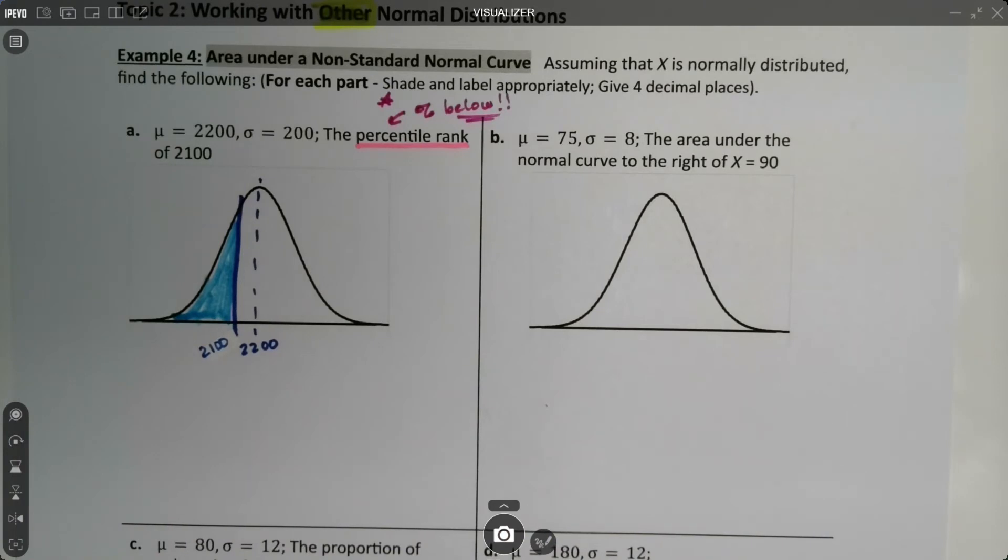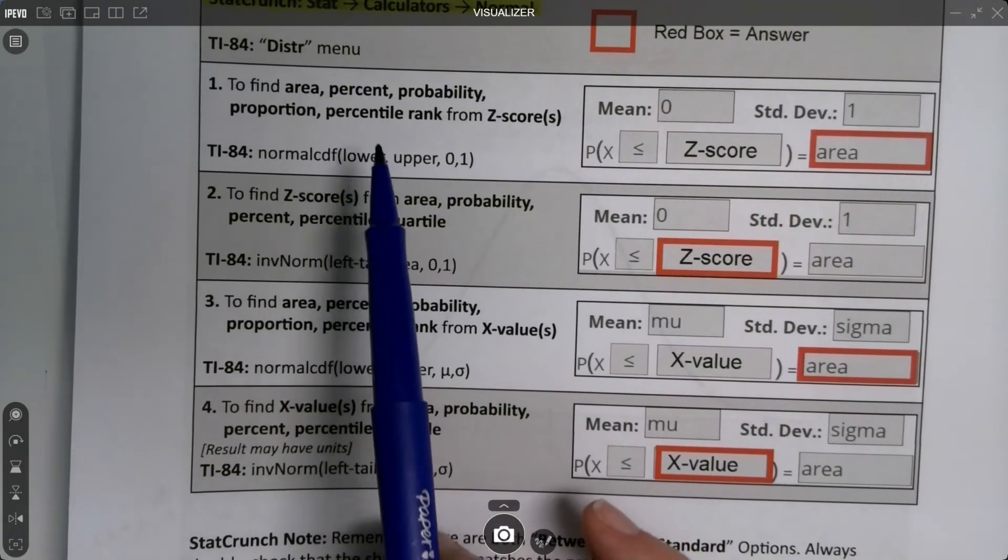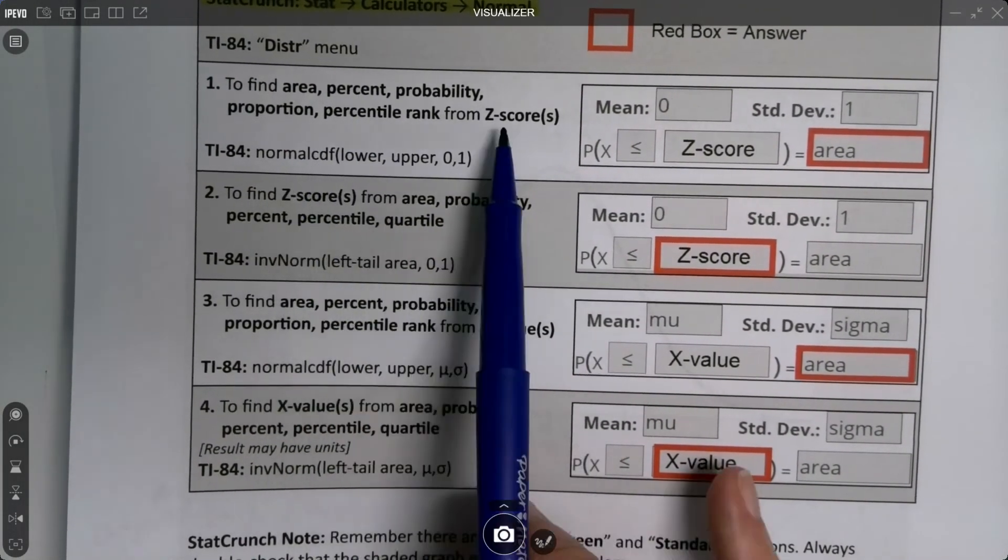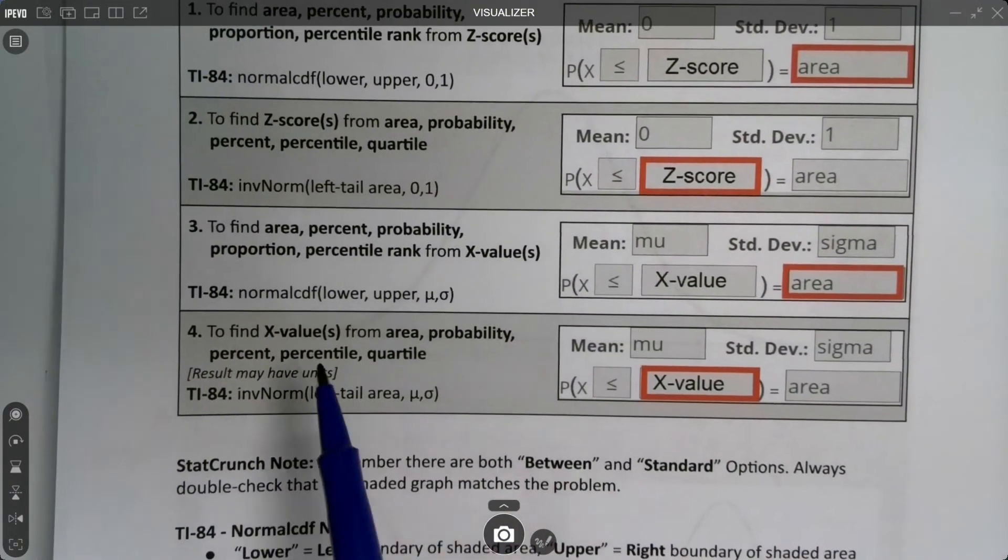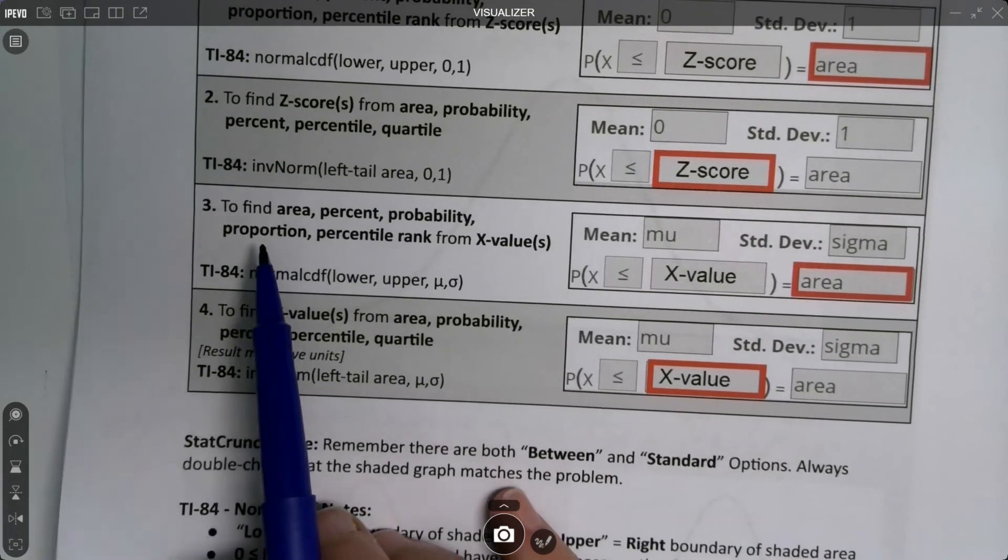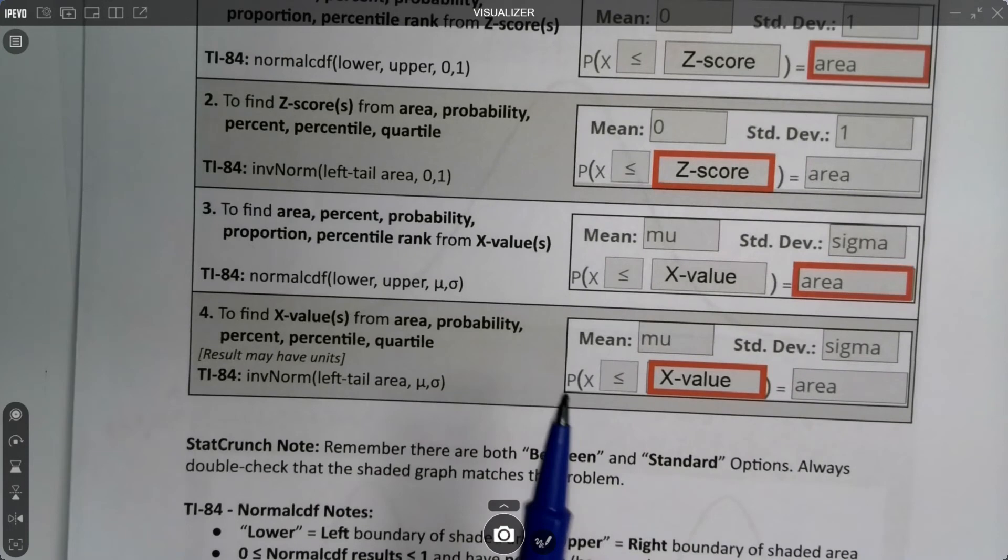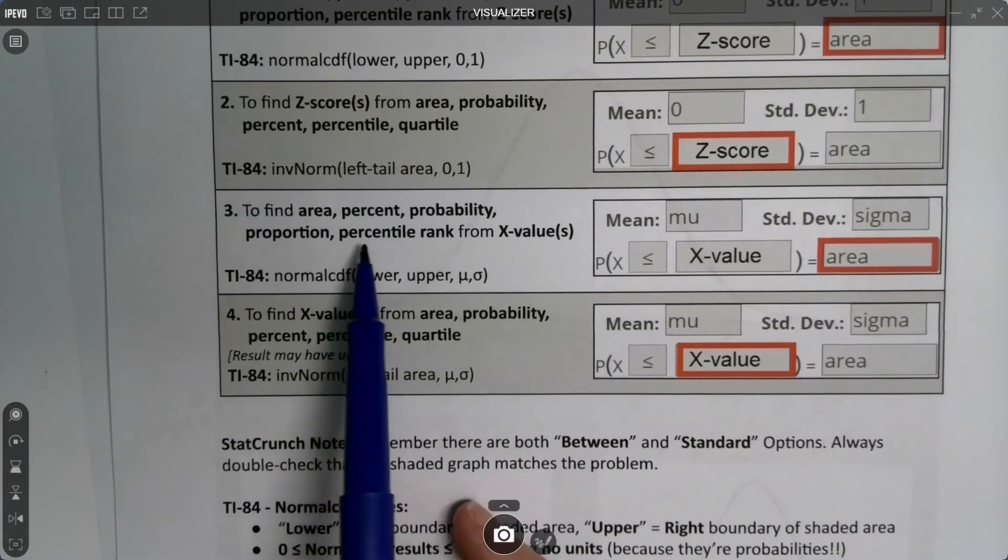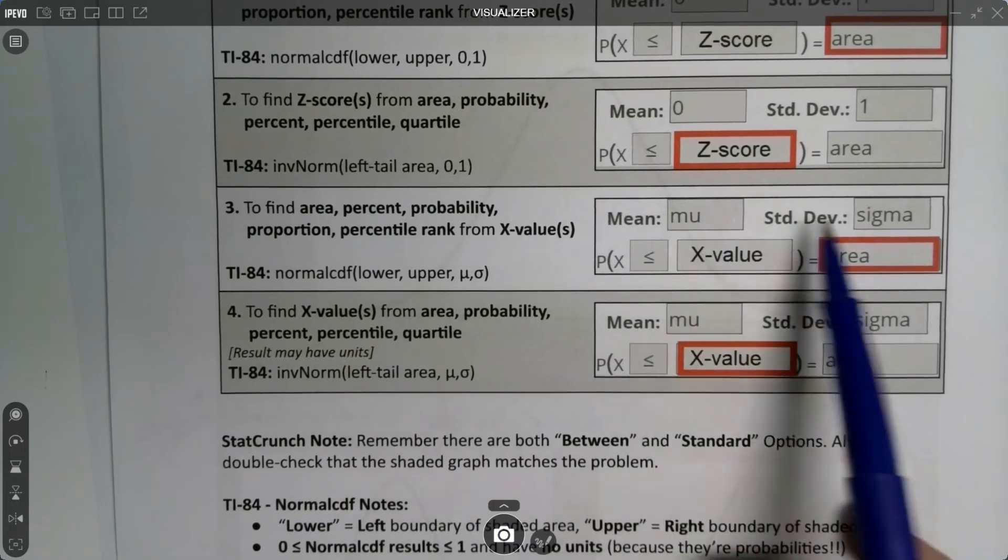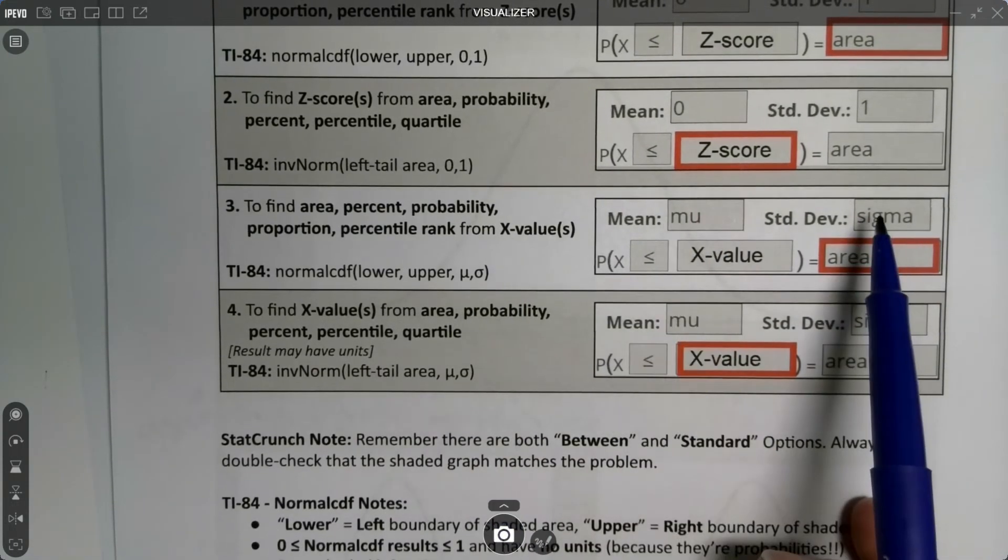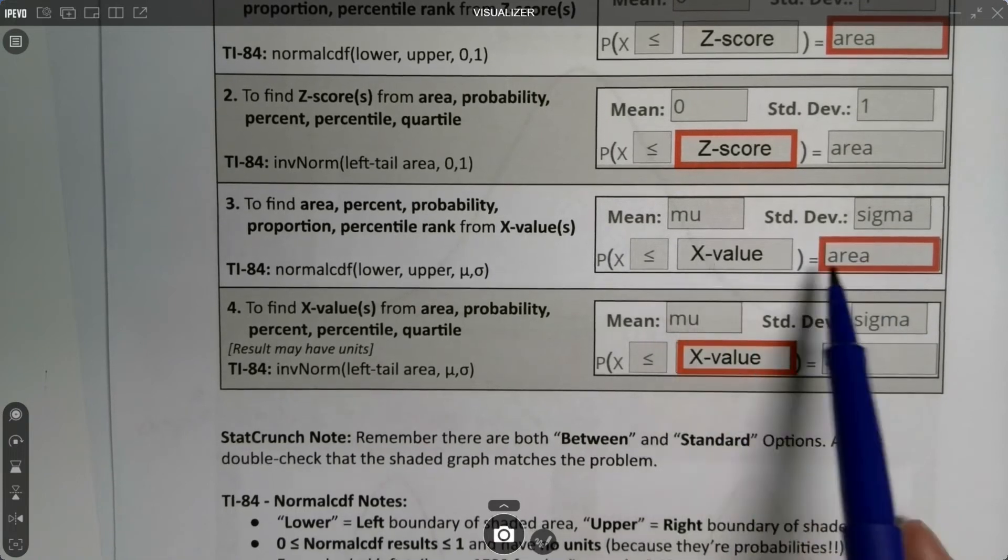So now if we look at our technology table, let's think about this. We're not in the top two anymore, because the top two, one and two, we're talking about z-scores. They had zero and one as their standard deviation, which we don't have. So we're in three. We're going to find the area, percent, probability from an x-value. It's asking us to find the percentile rank given an x-value, 2100. So we're going to put mean and standard deviation, mu and sigma, into for those values. And then we're going to tell it the x-value in StatCrunch.